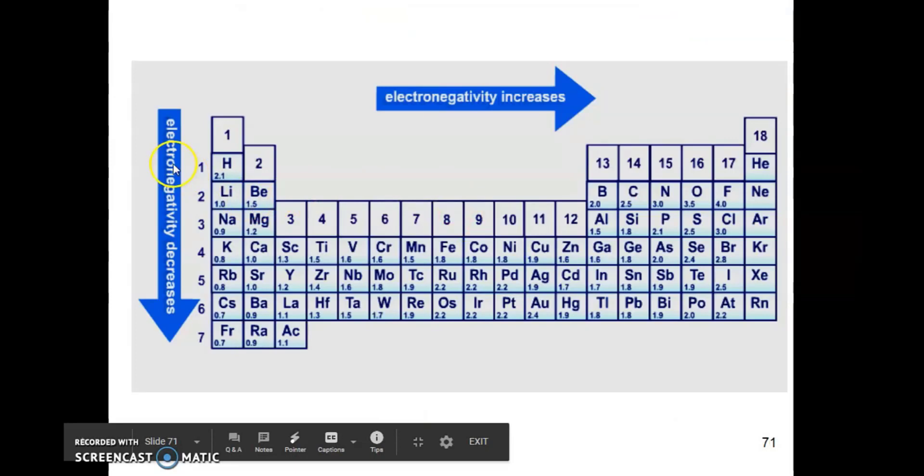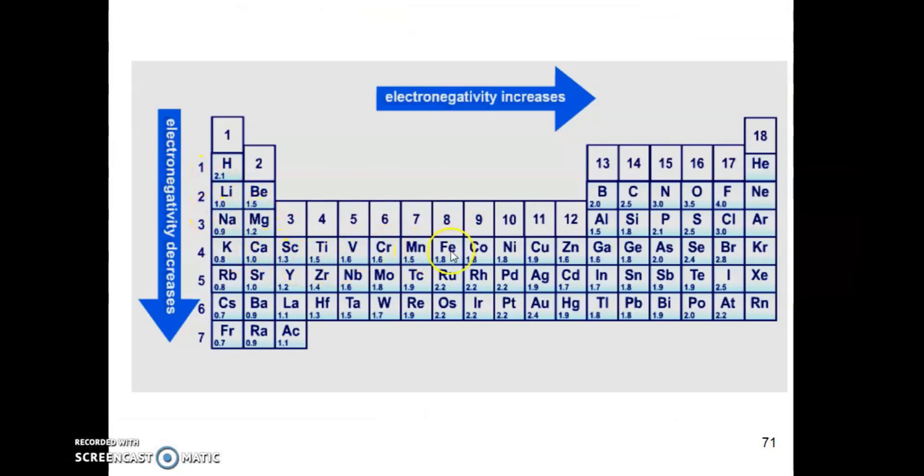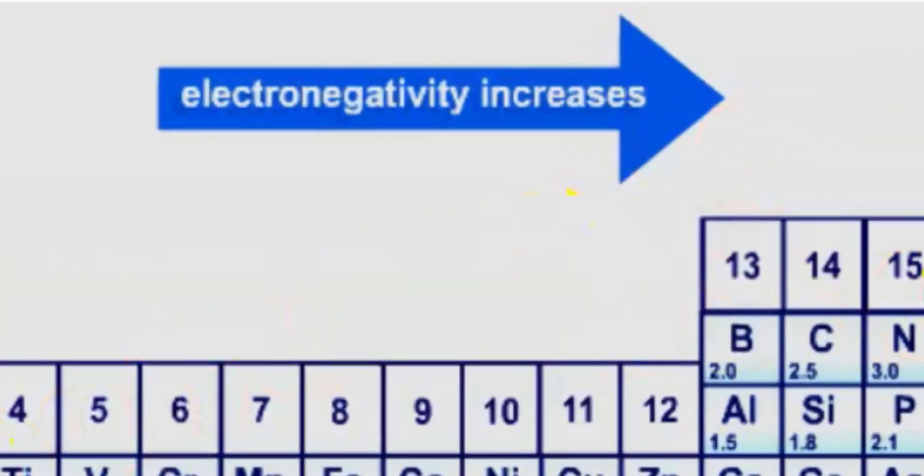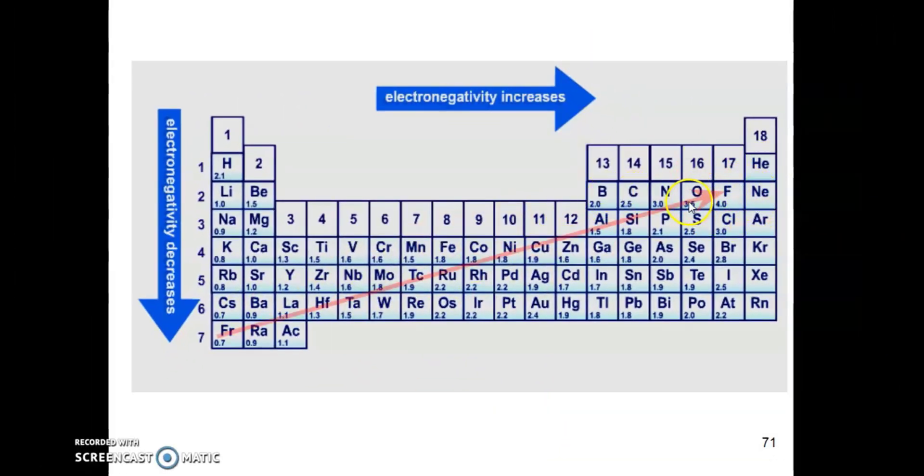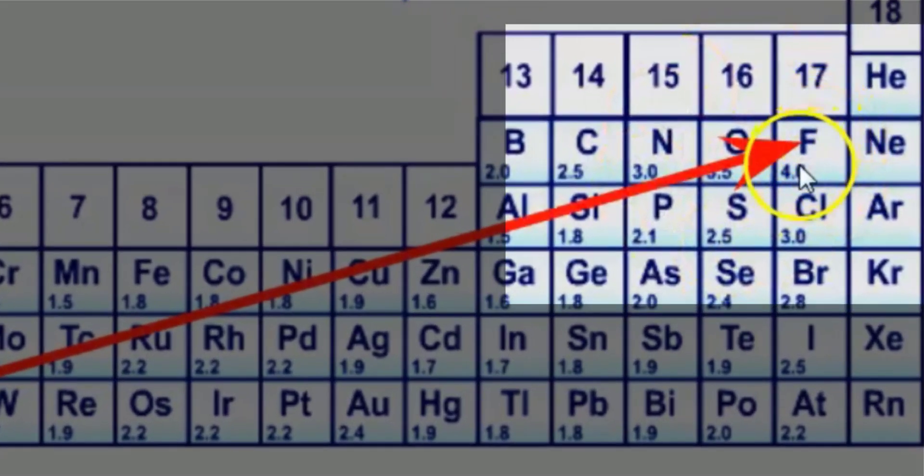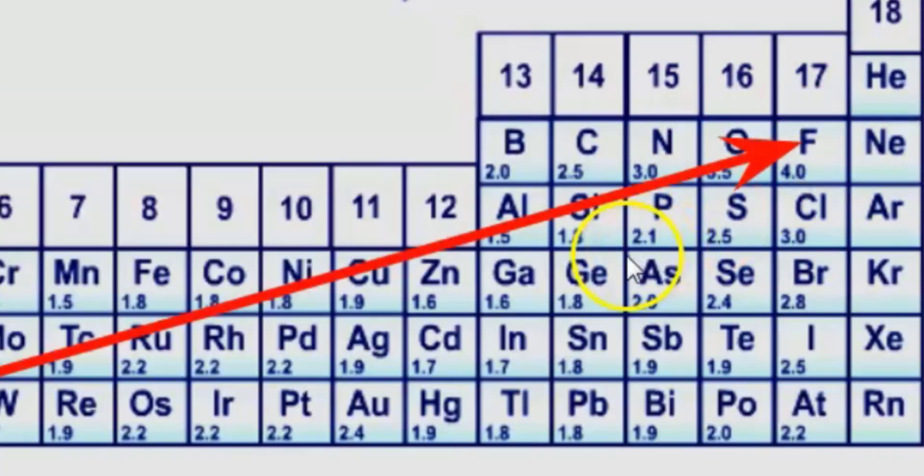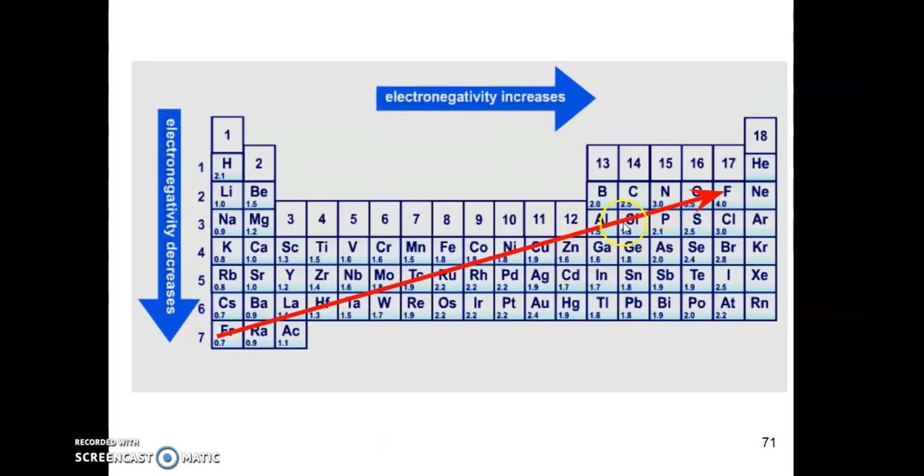As you can see here, we have a periodic table with values below each of the elements. These values represent the magnitude of Pauling's scale that also describes the strength of electronegativity for the elements. We have learned before that in general, electronegativity increases across period and up a group. Essentially, electronegativity is increasing in all directions towards fluorine because fluorine is the one with the highest magnitude of Pauling's scale, which is 4.0, and therefore, it is the most electronegative element in the periodic table.